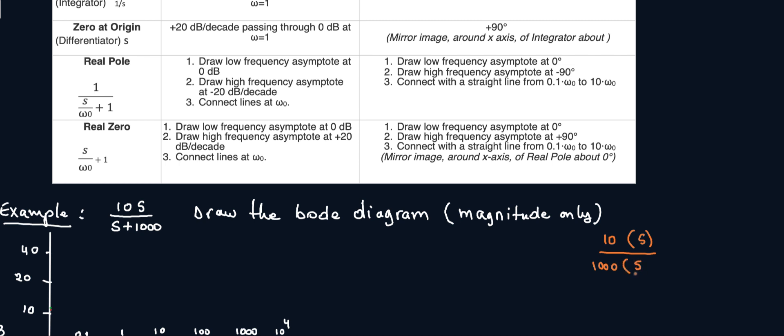So this will be s over a thousand plus one. So in order for you to make sure that you get it right, just plug it back in and cancel out. It has to be the same thing as the original equation. That's how you check yourself.